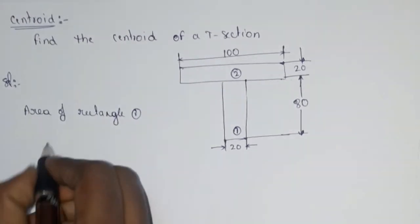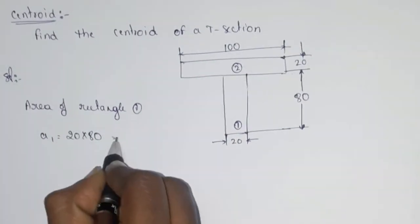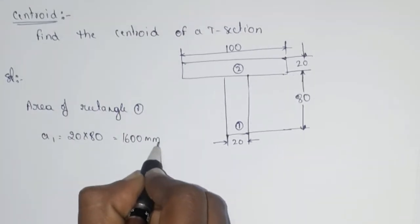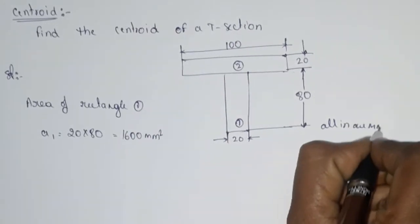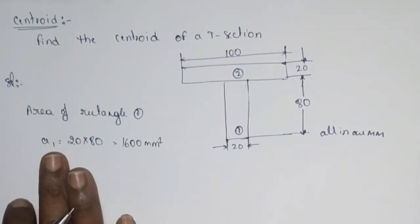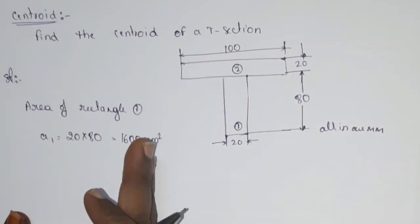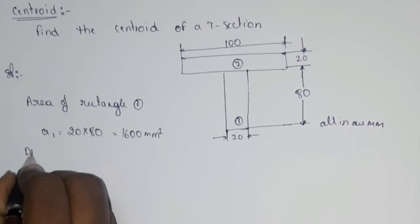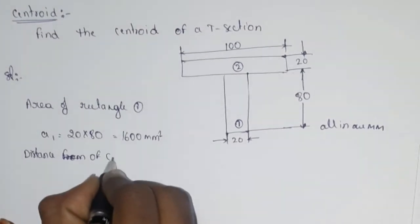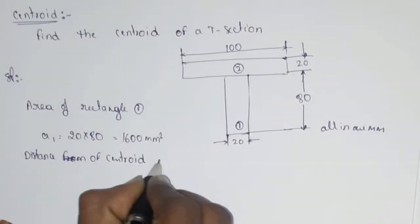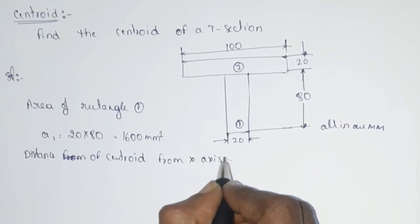A1 equal to 20 into 80, which is 1600 mm square. All dimensions are in mm and the area is found out. Now we will find the distance of the centroid from the x-axis.